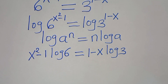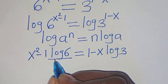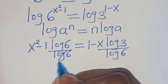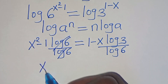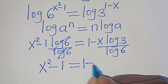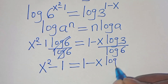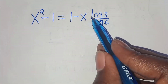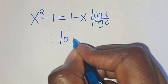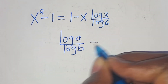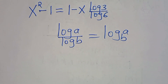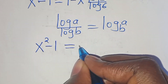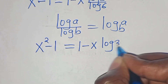Applying this power property, we have x squared minus 1 times log 6 equal to 1 minus x times log 3. The next step is to divide both sides by log 6, so that x squared minus 1 equals 1 minus x times log 3 divided by log 6. Now log 3 divided by log 6 is in the form log a divided by log b, which we can express as log a to base b. Applying this, we have x squared minus 1 equal to 1 minus x times log 3 to base 6.